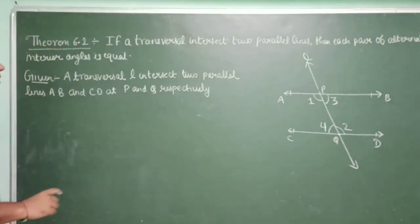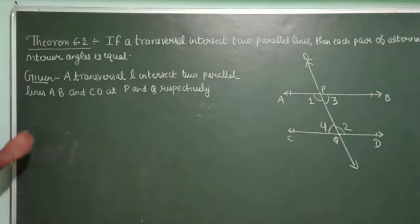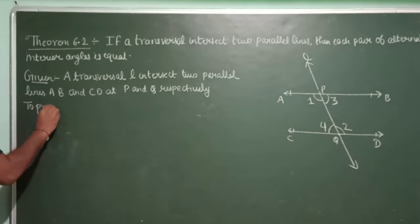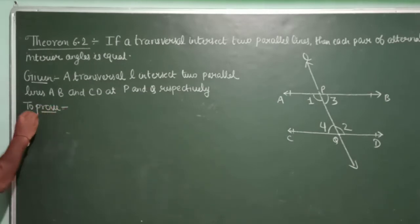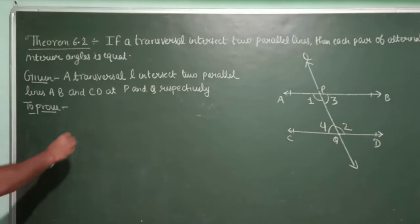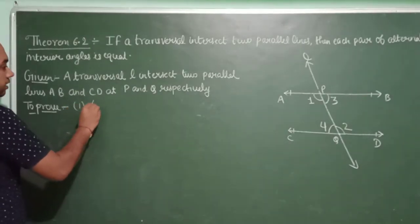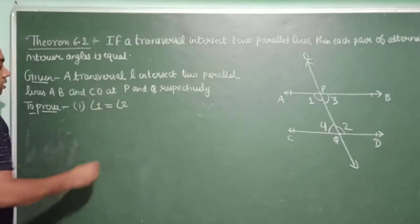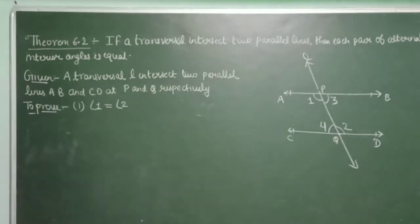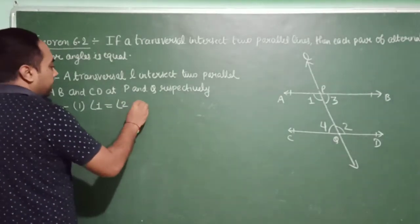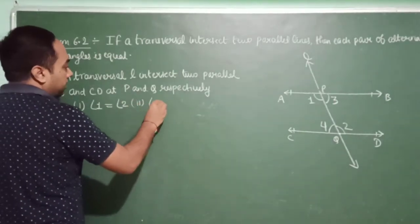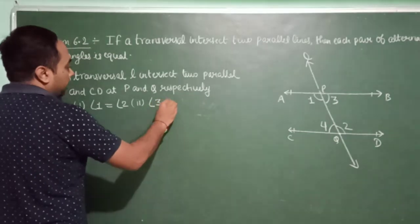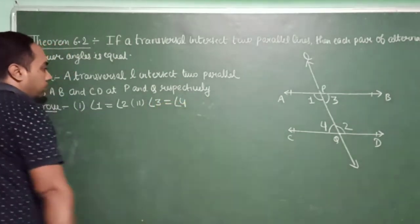To Prove: Each pair of alternate interior angles are equal. The first pair of alternate interior angles is angle 1 equal to angle 2, which we will prove first. The second pair is angle 3 equal to angle 4.